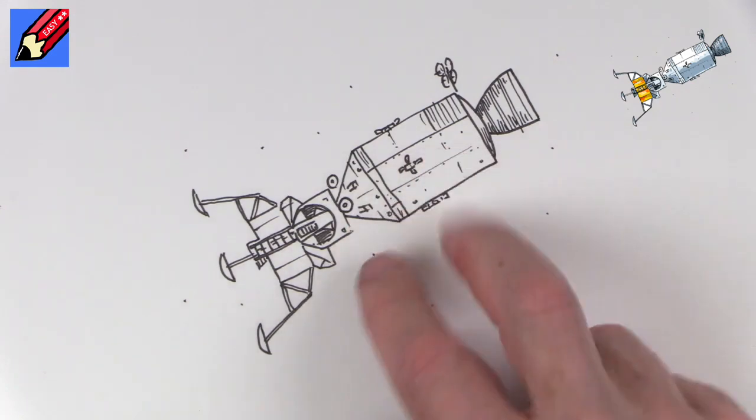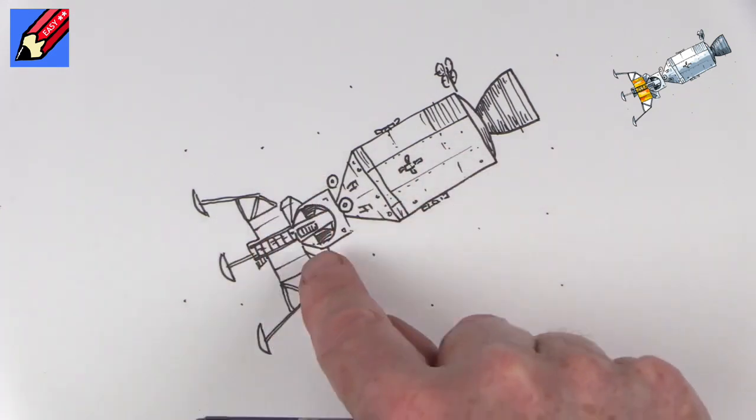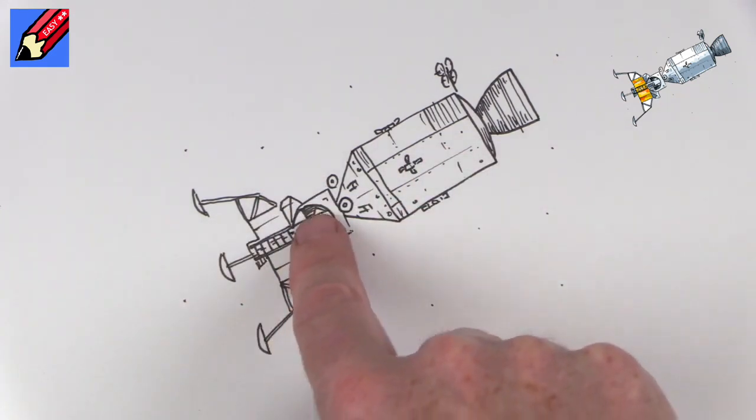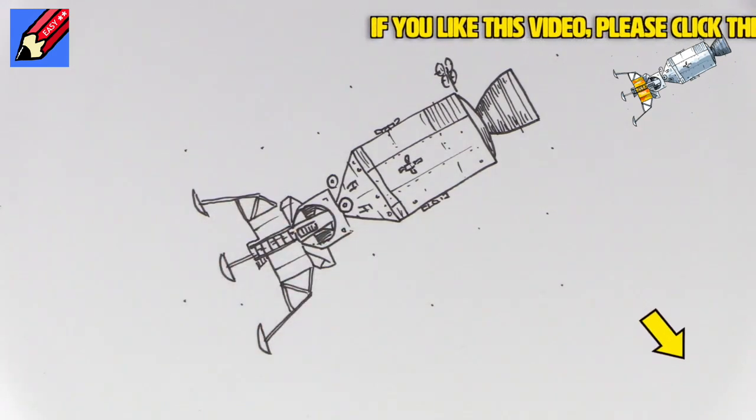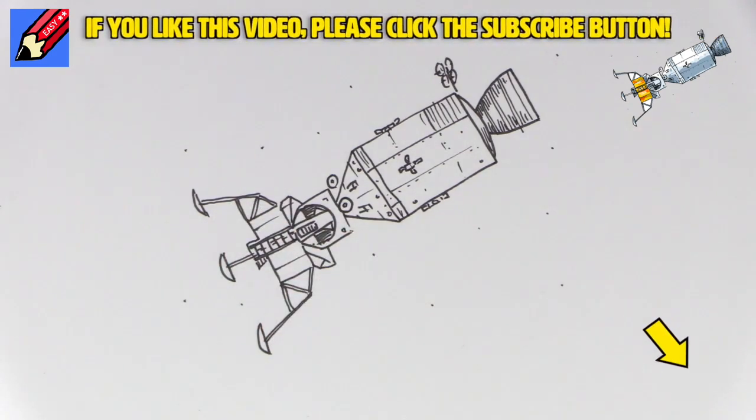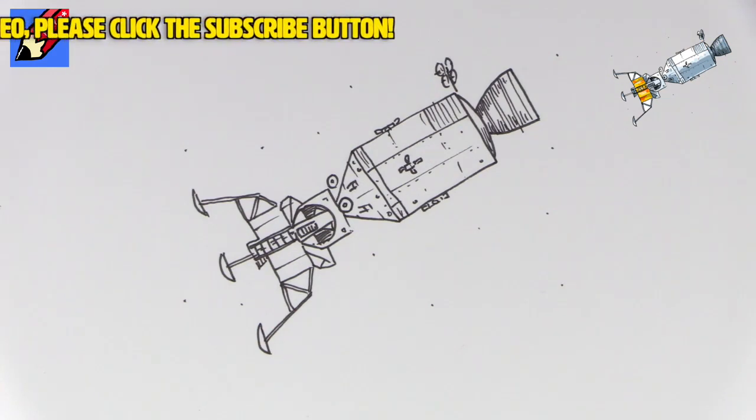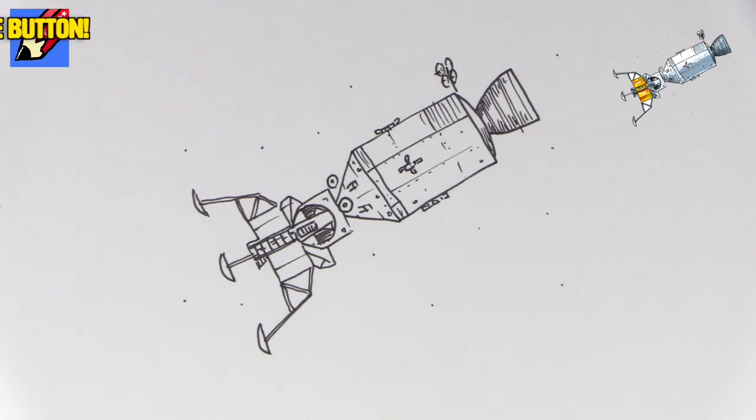This is the command module, this is the service module. Altogether this is the lunar excursion module, this is the lunar escape module, and this is the lunar landing module. Thanks for watching, and make sure you are subscribed to Draw Stuff Real Easy and keep coming back for lots more drawings every week. In the meantime, keep drawing, drawing, drawing, practice, practice, practice. And I'll see you next time. You take care now, bye bye.